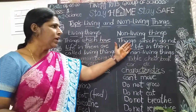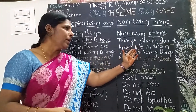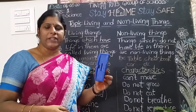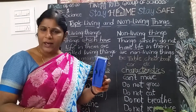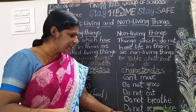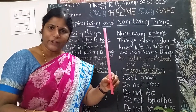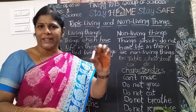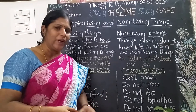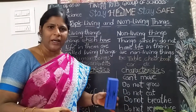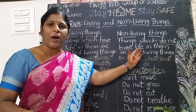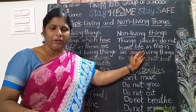So what are the non-living things? Things which do not have life in them are called non-living things. For example, this duster — does it walk like you? No. Does it need food like you? No. Does it grow like you? No. Does it breathe like you? No. These are non-living things; they do not have life in them.